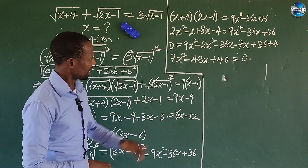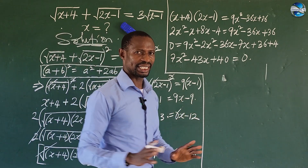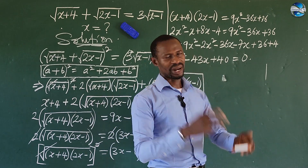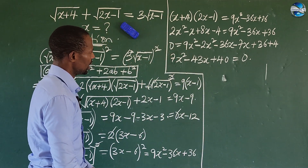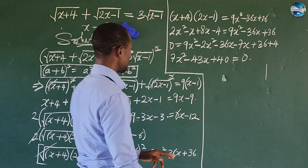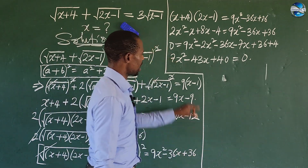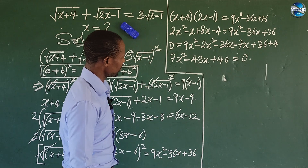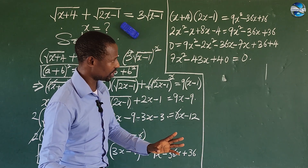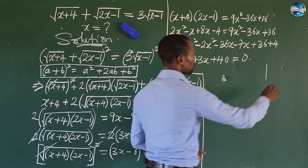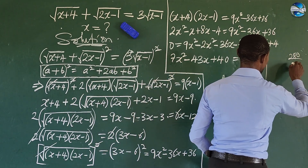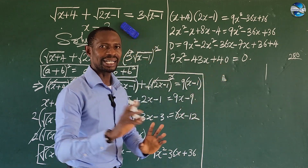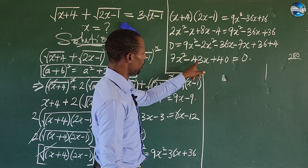This is a quadratic equation. We can solve it using the formula method, completing the square, or factorization. Let's check if the factorization method works. We have 7 attached to x², so we multiply 7 by 40 to get 280. Among the factors of 280, we look for two numbers whose product is 280 and whose sum is minus 43.